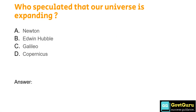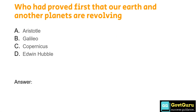The first question is: who speculated that our universe is expanding? Option A: Newton, Option B: Edwin Hubble, Option C: Galileo, Option D: Copernicus. The correct answer is Option B, Edwin Hubble. Who had proved first that our Earth and other planets are revolving? Option A: Aristotle, Option B: Galileo, Option C: Copernicus, Option D: Edwin Hubble. The correct answer is Option C, Copernicus.